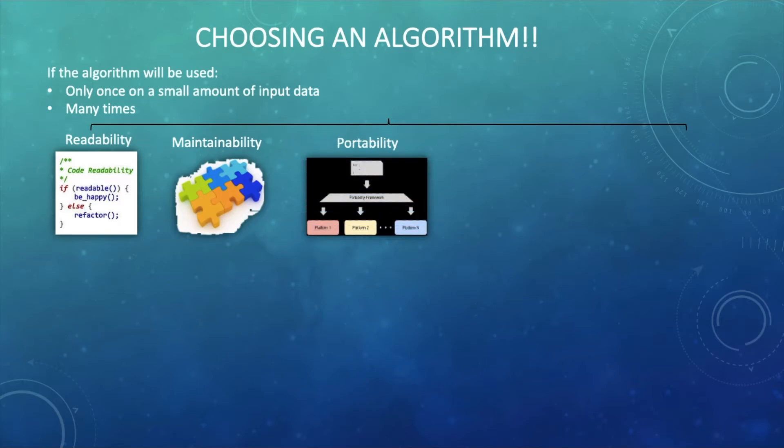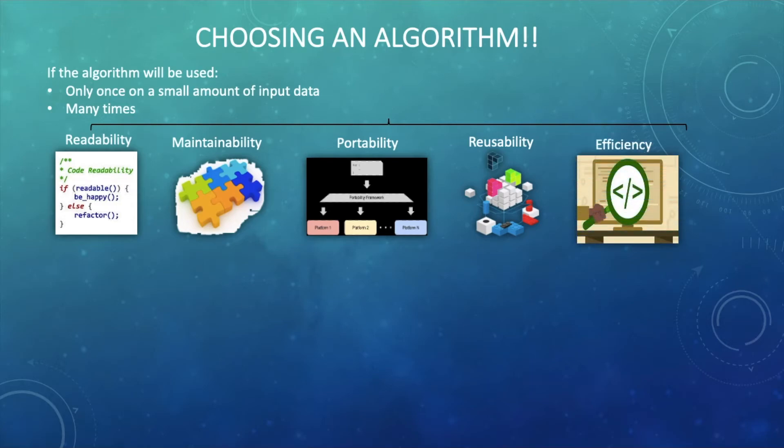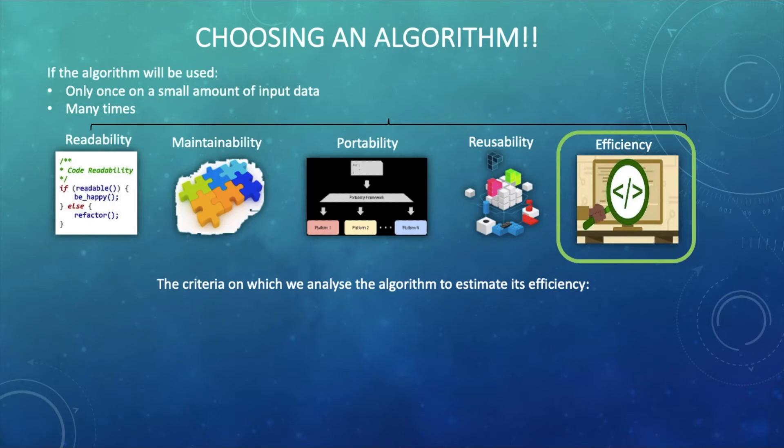Next factor is the portability which says whether the code has ability to run on as many different machines and operating systems as possible. It would be waste of time and energy for a programmer to rewrite the same code again when it is transferred from one environment to another. Next is reusability if we can easily reuse any component of the existing code. And the last one here is efficiency which is related to the performance and speed of running the algorithm. We will study efficiency in detail today.